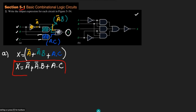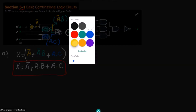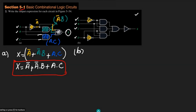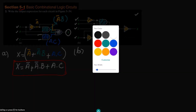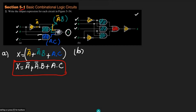Similarly, to solve Part B, we are given four inputs: A, B, C, and D. We have different gates here. I will use yellow for the NOT gates, another color for the AND gates, and red for the OR gate.